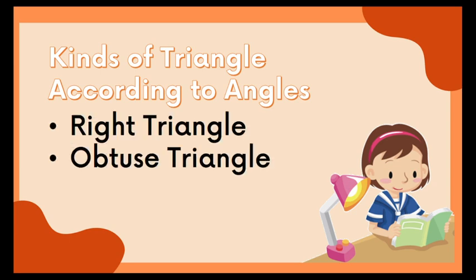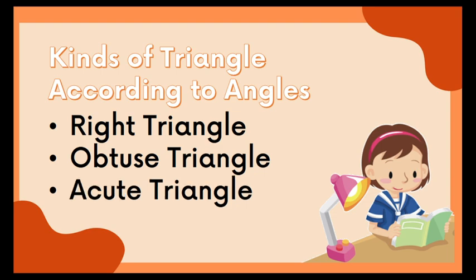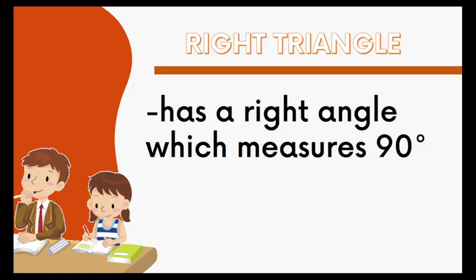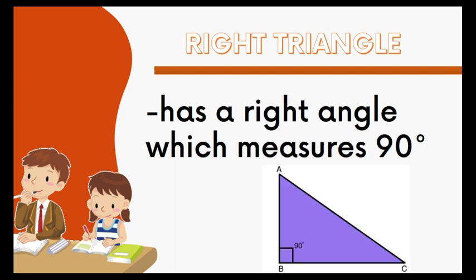We have the right triangle, the obtuse triangle, and the acute triangle. The right triangle has a right angle which measures 90 degrees. As you can remember, a right angle measures 90 degrees. So when we have a right triangle, it has a right angle which measures 90 degrees. Let us look at our example — there is a right angle that measures 90 degrees.